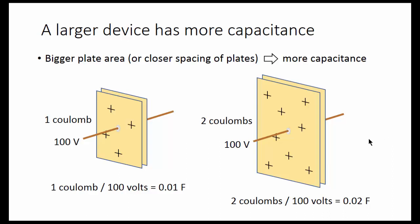Same with electronic capacitors. This capacitor has twice the area. It stores twice as much charge for the same voltage. So it has 0.02 farad instead of 0.01 farad capacitance.